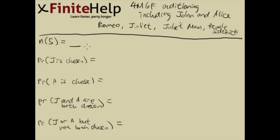If you can't figure out whether a problem is permutation or combination, here's a suggestion: go ahead and draw out the slots and name them. See whether the slot names should be different or not. Here we have Romeo, Juliet, Juliet's mom, and sidekick — obviously all different. But if all you can say is ball, ball, ball, and ball, that's combination, and you can't use slots because order doesn't matter.